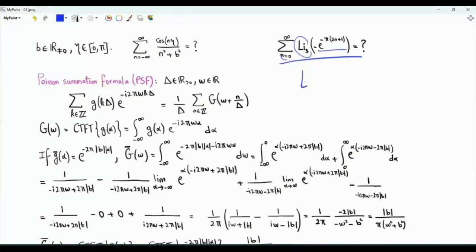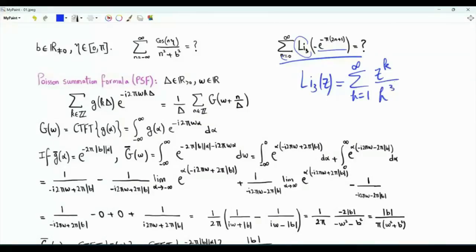The trilogarithm of z is given by the infinite series: summation k from 1 to infinity of z to the power k divided by k cubed. This is for a complex z such that the magnitude of z is less than 1.